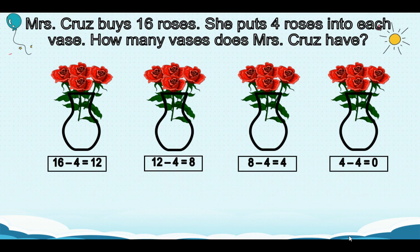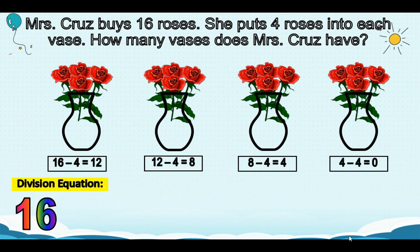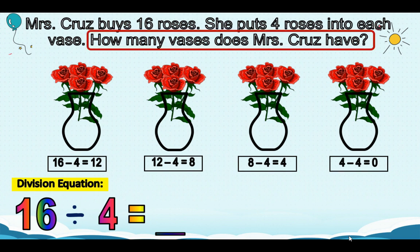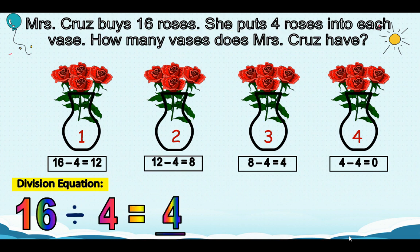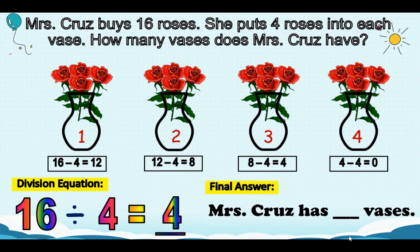This time, we will use division. Here's our division equation. 16 divided by 4 equals how many vases does Mrs. Cruz have? Let's count: 1, 2, 3, 4. So, the answer will be 16 divided by 4 equals 4. Mrs. Cruz has 4 vases.